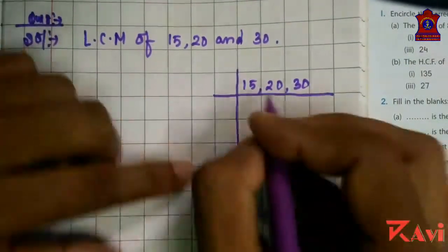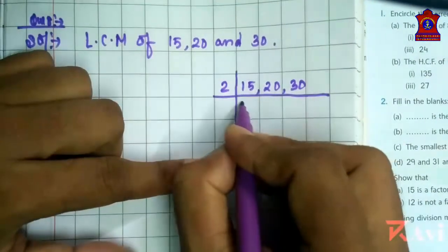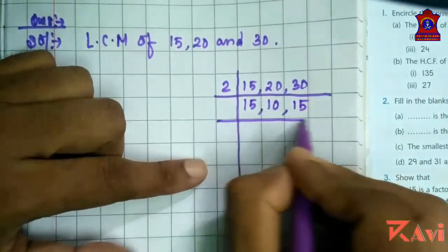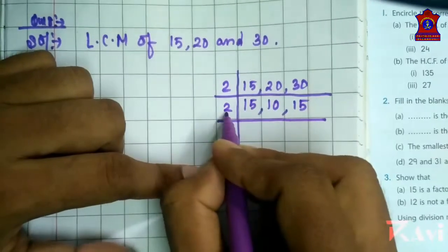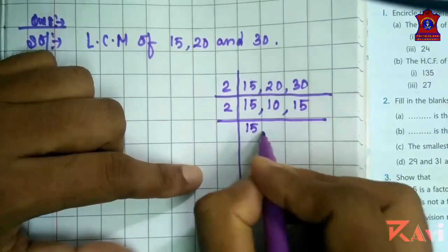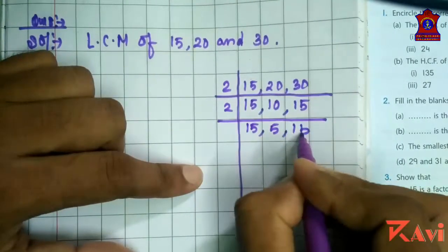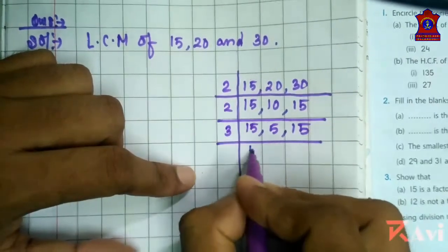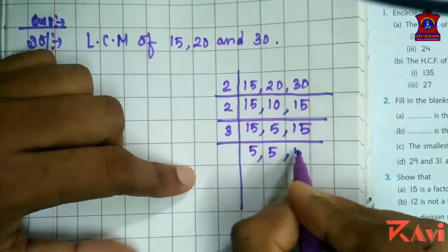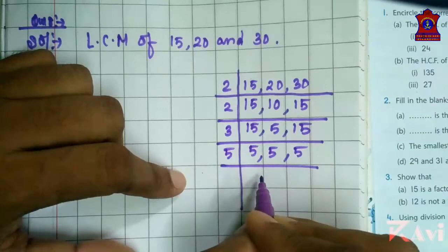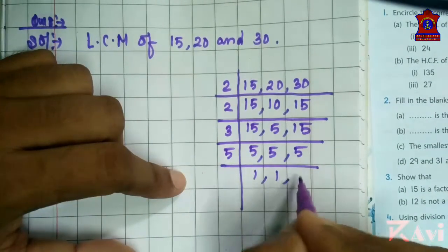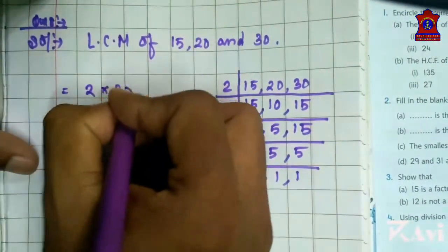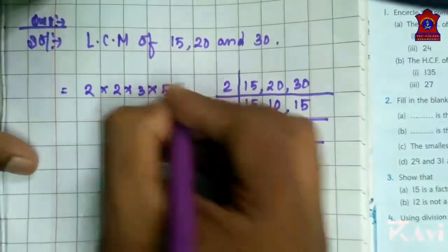Start with 2's table. 15 is not divisible, so write it as it is. 2 tens are 20, 2 fifteens are 30. Again, 10 is there, so you can take 2's table. 2 fives are 10. 15 will remain 15. Now, next number is 3, and 15 is divisible by 3. So take 3. 3 fives are 15. 5 is not divisible. Now, take next number as 5. 5 ones are 5, 5 ones are 5, 5 ones are 5. So what are the prime factors you have got here? 2 into 2 into 3 into 5.